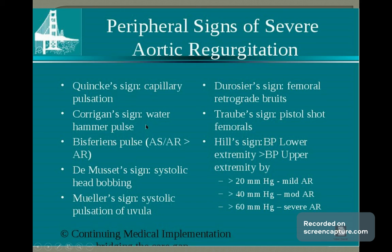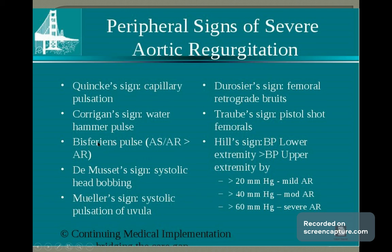The collapsing pulse can occur in other conditions as well, like in severe anemia or arteriovenous fistulas. In cases of combined aortic stenosis and aortic regurgitation, you find the Corrigan's pulse along with a slow-rising pulse — parvus et tardus — giving the Bisferiens pulse, where the diastolic notch is wider. This is called the Bisferiens pulse.